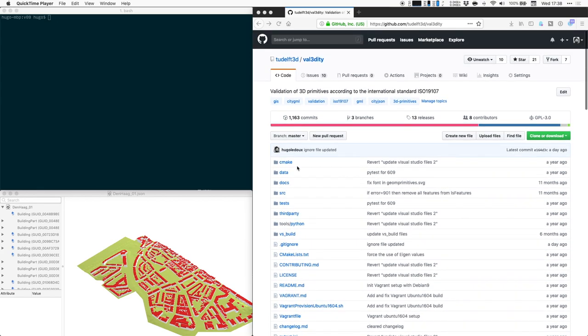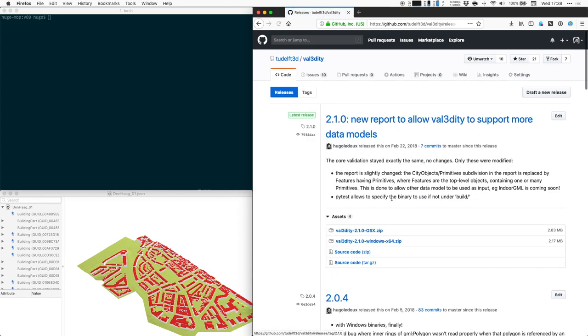The source code of val3dity is available on GitHub but you don't need to compile the source code yourself you can simply download one of the binary so if you click on release you can see that we have binaries for Windows and for macOS so if you download the binary for your operating system then you can run it directly.